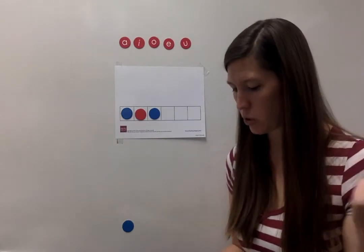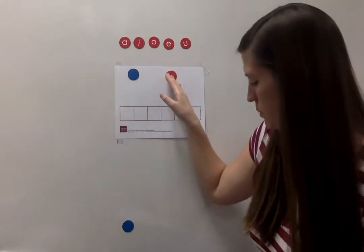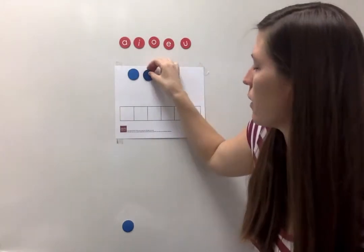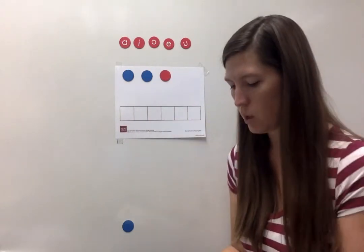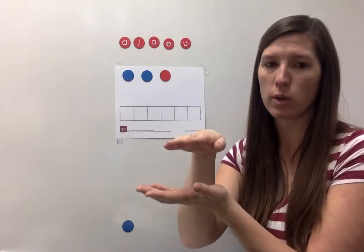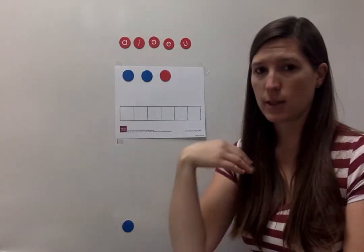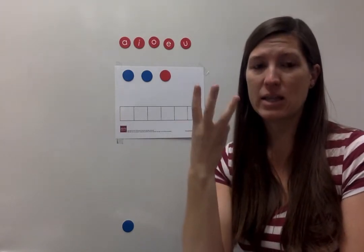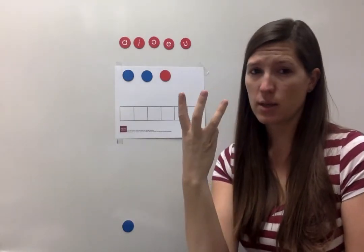Let's build more words. My new word is 'lid'. A lid is like what you put on top of a container so your soup or your lunch doesn't fall out or spill. Lid — repeat: lid. Let's finger stretch lid: l-i-d, one more time, l-i-d. What's the vowel sound? I.